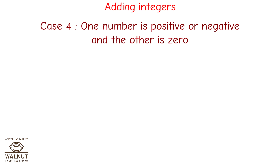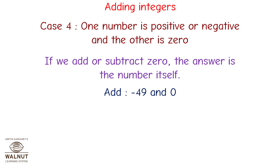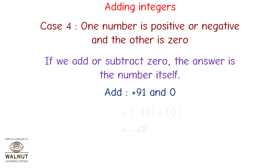Case 4: one number is positive or negative and the other number is 0. If we add or subtract 0, the answer is the number itself. Minus 49 and 0 is equal to minus 49. Plus 91 and 0 is equal to plus 91.